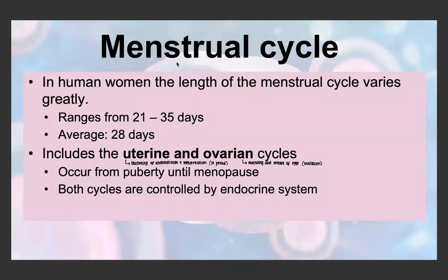This video explains the menstrual cycle for the biology syllabus. In a human woman, the menstrual cycle varies in length but is usually around 28 days — it can range from 21 to 35 days, and sometimes more extreme than this, but on average we talk about it as 28 days.